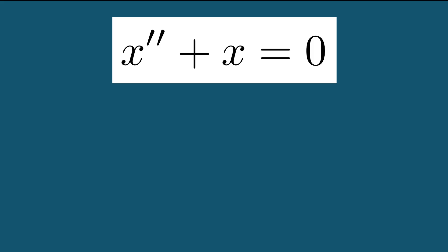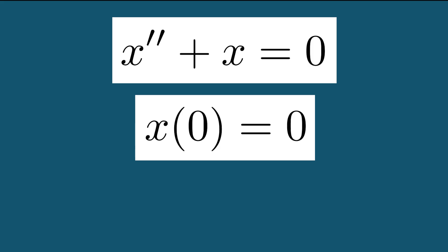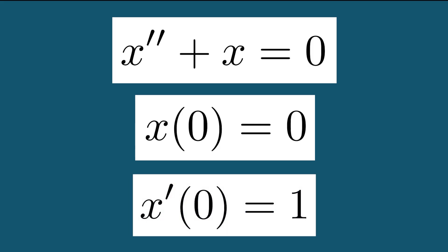To solve this equation, we need to choose the initial conditions for position, or x, and velocity, or x prime, the first derivative of position. Let's keep things simple, choosing the starting position to be zero and the initial velocity to be one.